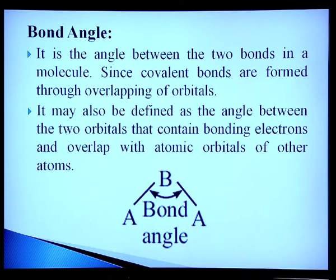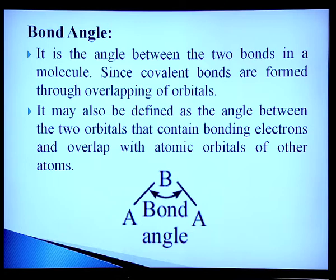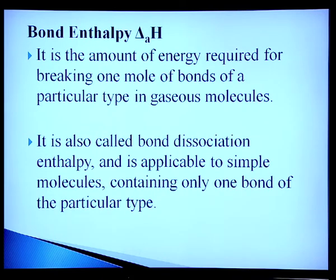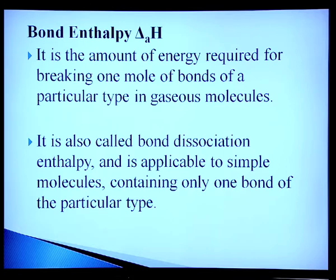Bond angle is the angle between two bonds in a molecule. Since covalent bonds are formed through overlapping of orbitals, it may also be defined as the angle between two orbitals containing bonding electrons that overlap with orbitals of other atoms. Bond enthalpy is the amount of energy required to break one mole of bonds of a particular type in a gaseous molecule. It is also called bond dissociation enthalpy and applies to simple molecules containing only one bond of that type.